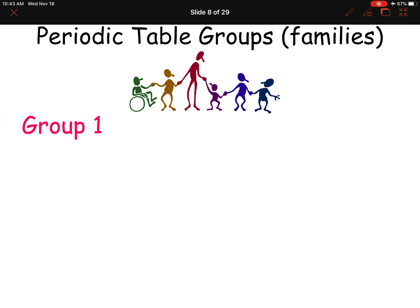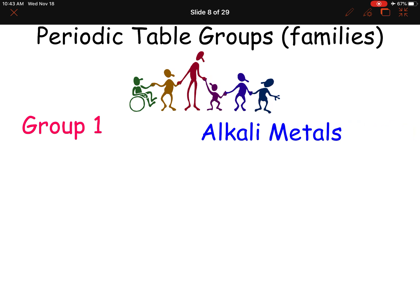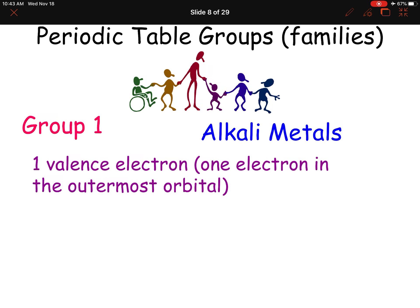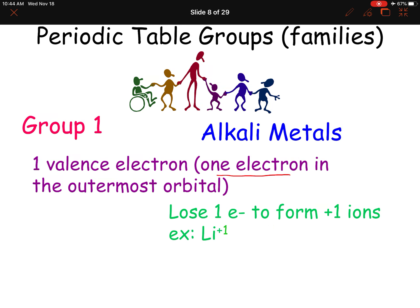They also have names. Group one — the first column — is called the alkali metals. Although hydrogen is in group one, it's not a metal, so we're not going to include hydrogen. They all have one valence electron, meaning there's one electron in the outermost orbital or electron shell. They lose an electron to form a positive one ion — for example, lithium plus one. And they are very, very reactive.